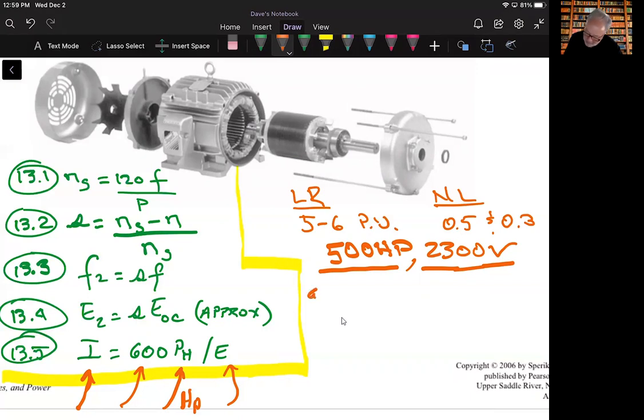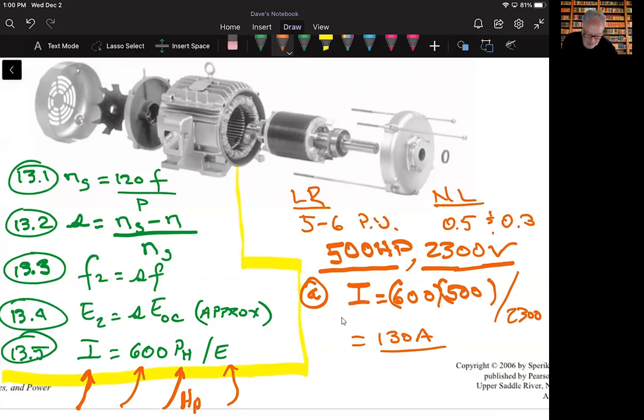So let's do part A first. And I'll just go through. We'll just pull our equation out here. The full load current is the equation that we have here. And this is accurate to do a very great approximation. And so 600 is a constant, 500 horsepower given, and then divided by 2300, which is the rated voltage. And when I plug and chug here, I get 130 amps is the full load current.